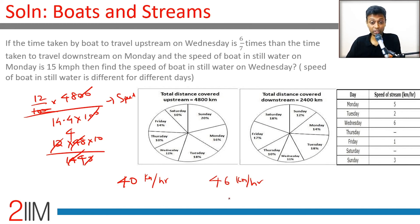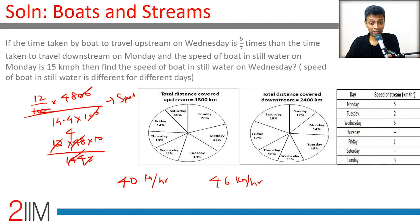The upstream speed on Wednesday is 40 km/h, and the speed of the stream on Wednesday is 6 km/h. So the still water speed on Wednesday is 40 + 6 = 46 kilometers per hour. To compare: on Monday the still water speed was 15 km/h, while on Wednesday it's 46 km/h — the boat has wildly varying speeds. The answer is 46 kilometers per hour.